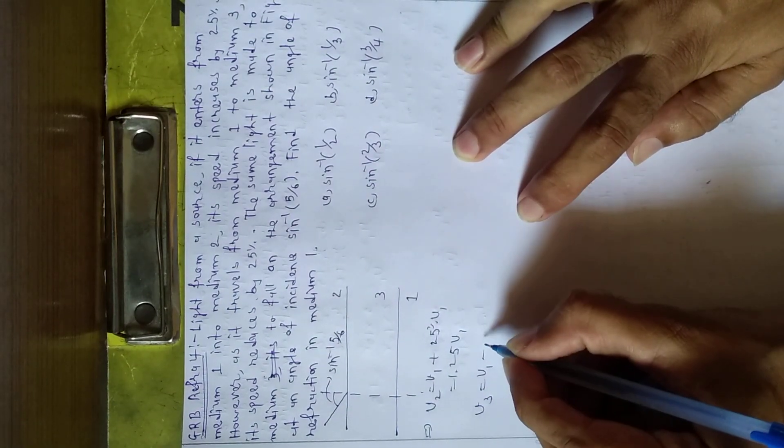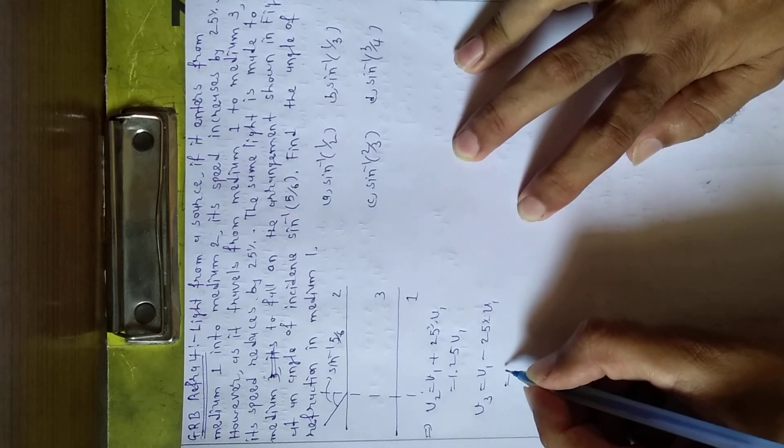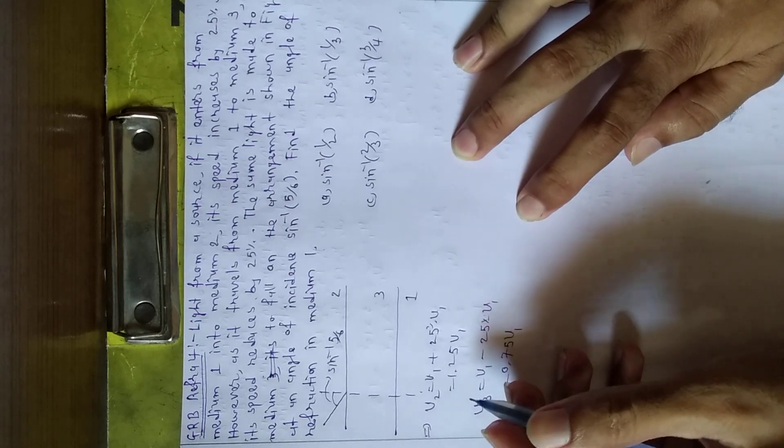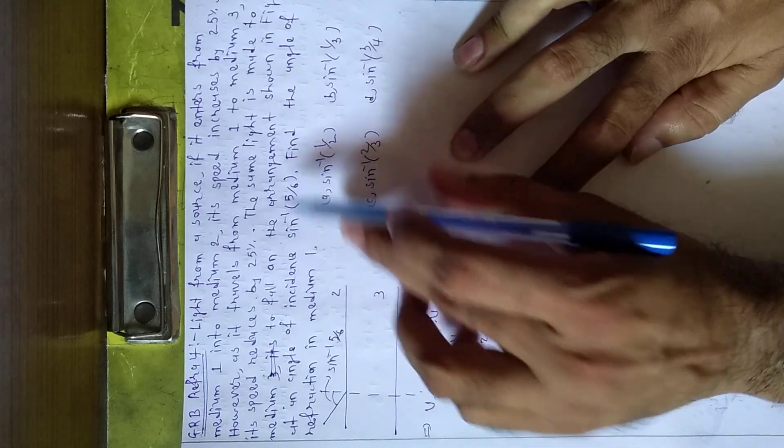equals v1 minus 25% of v1, therefore 0.75 v1. The same light is made to fall on the arrangement